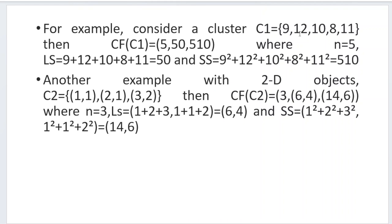To calculate the cluster feature for a given set of 1D points in cluster C1: if there are 5 points, then n = 5. The linear sum ls = 9 + 12 + 10 + 8 + 11 = 50. The sum of squares ss = 9² + 12² + 10² + 8² + 11². This gives us the cluster feature triple for that set of points.